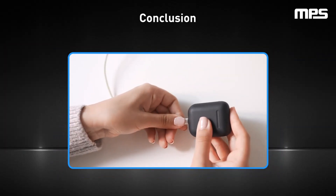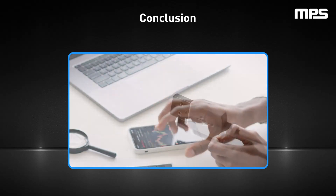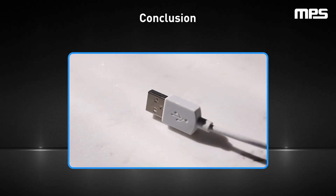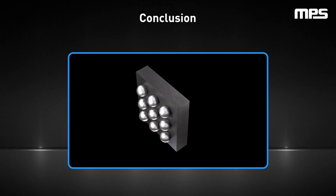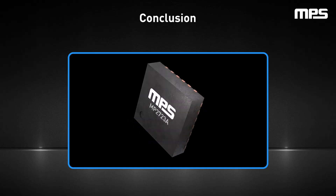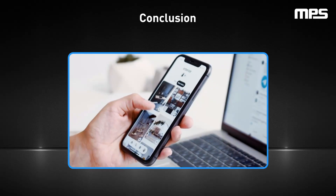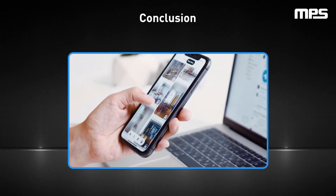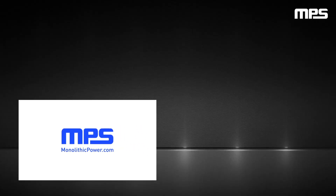Selecting the right battery charger involves understanding your device's power needs, the intricacies of charger topologies, and crucial safety features. MPS's battery charger solutions cover a wide range of high-performance ICs that can complement any battery-powered application, from single-cell chargers to battery chargers with 2-series cells or more than 3-series cell chargers. To learn more about these solutions or our other battery management products, visit monolithicpower.com.